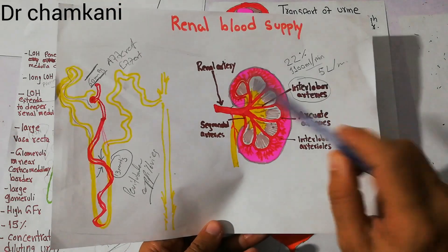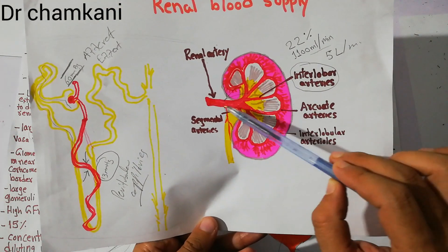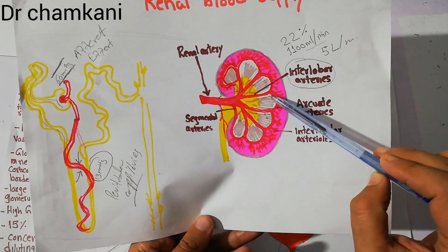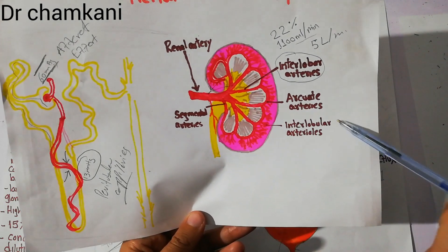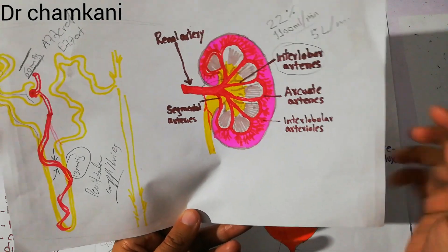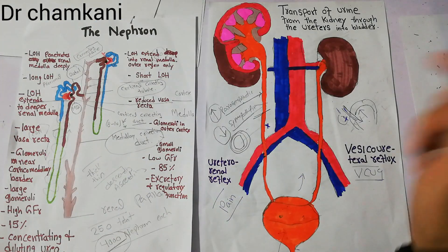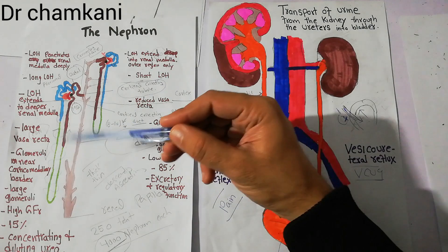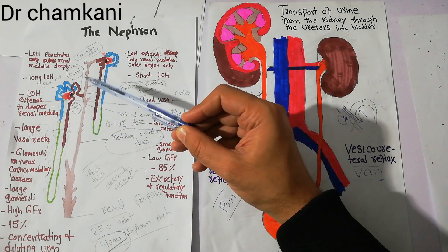We previously discussed the blood supply of the kidney. At the level of the arterioles, constriction occurs so that blood flow to the nephrons decreases.